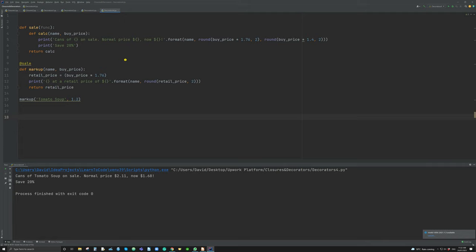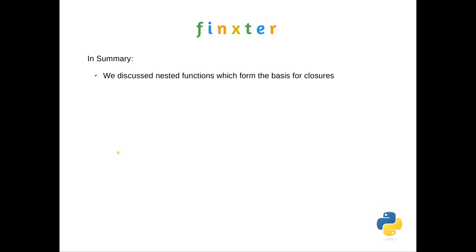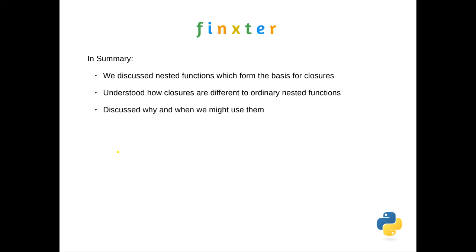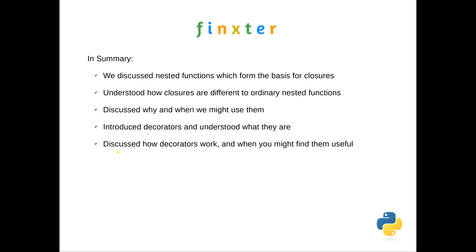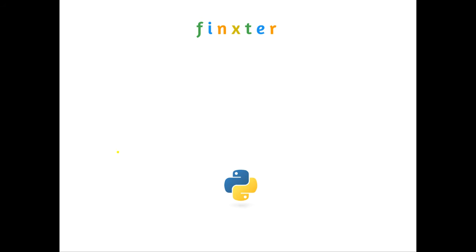In summary today: we discussed nested functions, which form the basis for closures but which aren't closures themselves. We understood how closures are different to ordinary nested functions — the main ability being for variables to be utilized after the function had been executed. We introduced decorators and understood what they are and how they work — effectively a function that enhances or decorates or changes the output of an existing function without changing the existing function. I hope that was useful. That's all we have for today, and I look forward to seeing you in the next video. Thanks for watching.